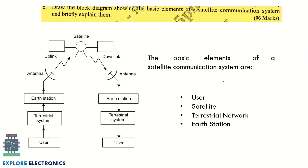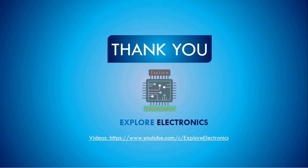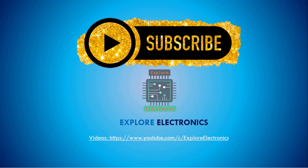The final question asks you to draw the block diagram showing the basic elements of a satellite communication system and briefly explain them. The diagram runs from the ground user through the terrestrial system and earth station up to the satellite, and back down through the earth station, terrestrial system, and user on the receiving side. Explain what is meant by user, satellite, terrestrial network, and earth station. This carries six marks and concludes the question paper.